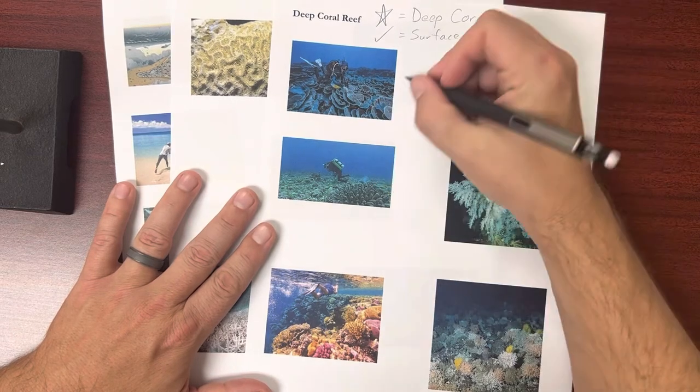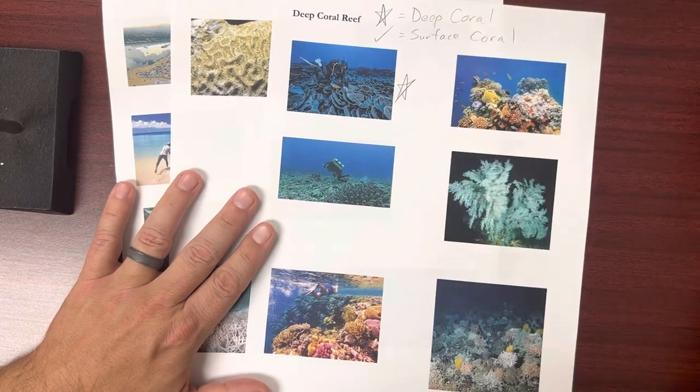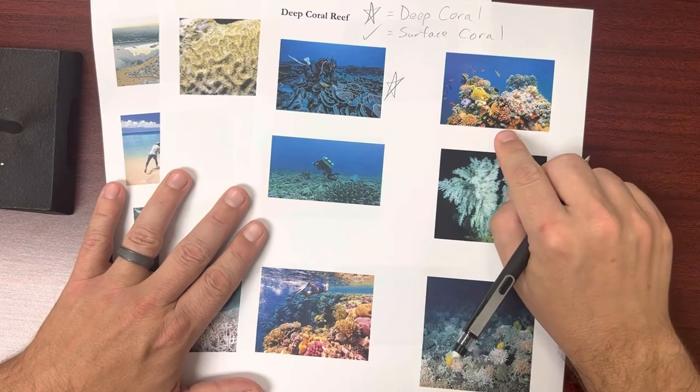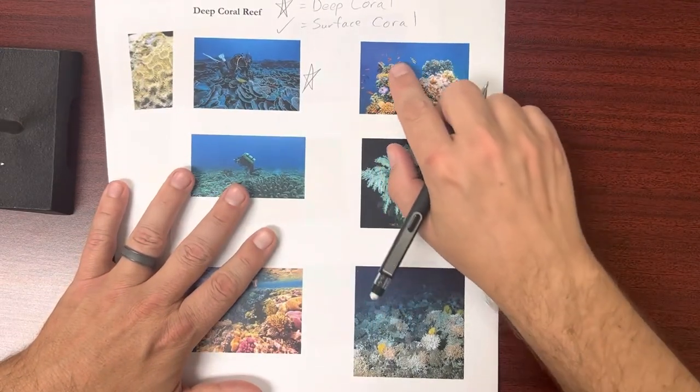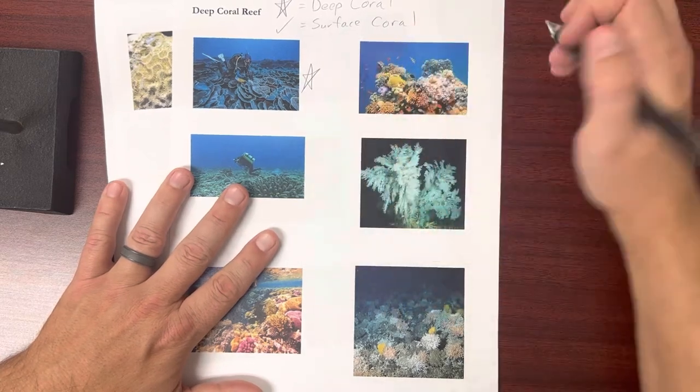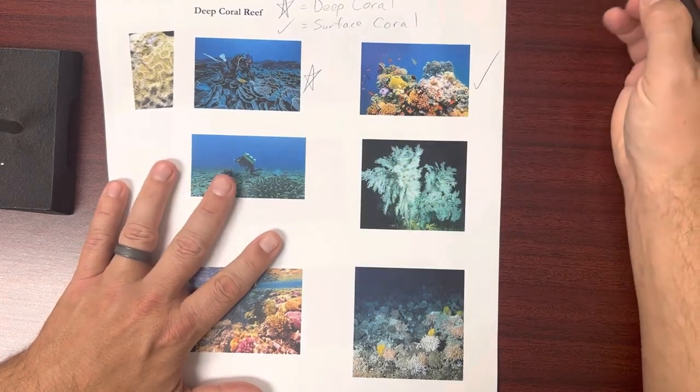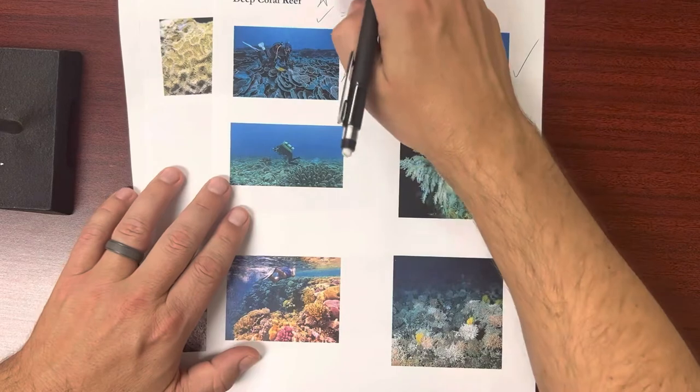All right, for instance, these big plate corals, those are deep reefs. We talked about that. But this here, these bright corals with all these bright fish, those are surface corals.